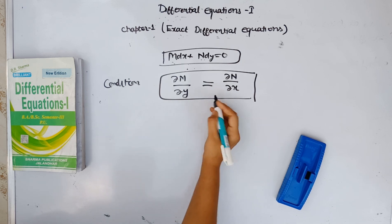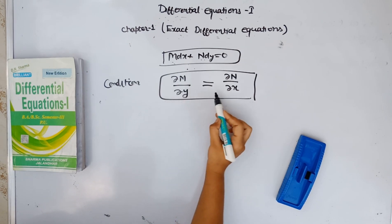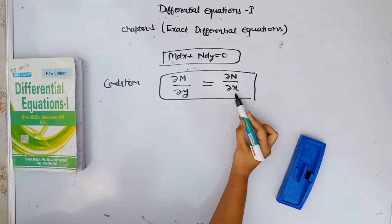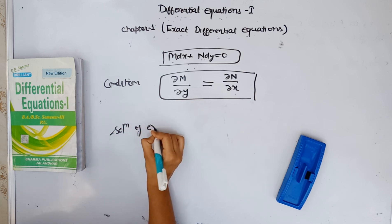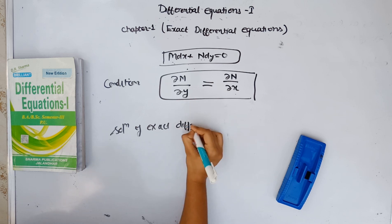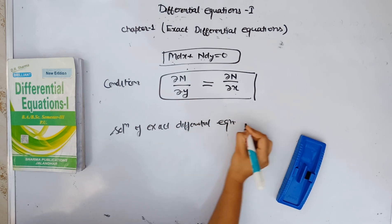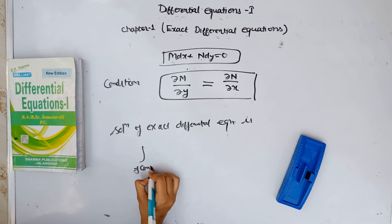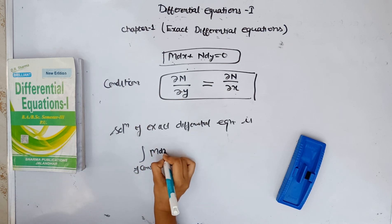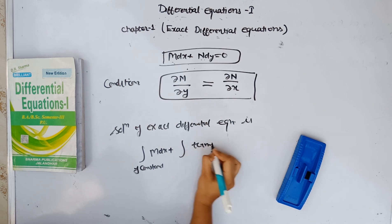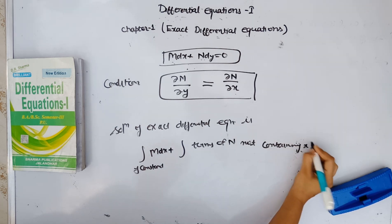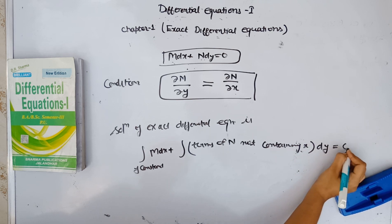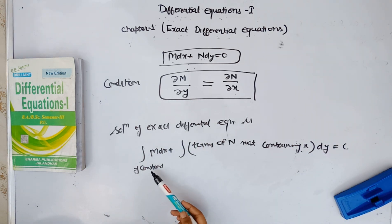So if the condition is satisfied, the solution of the exact differential equation is: integration of M dx (treating y as constant) plus integration of terms of N not containing x, dy, equals c. This is the general solution of our exact differential equation, and through this we can solve any sum.